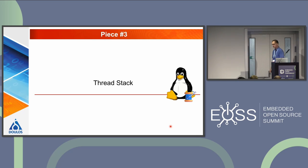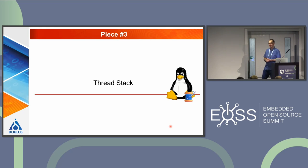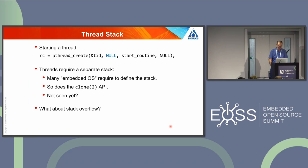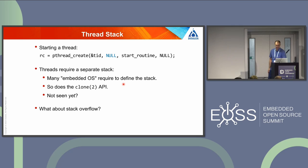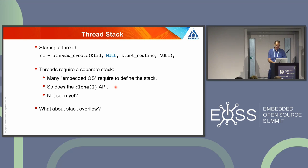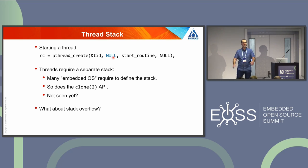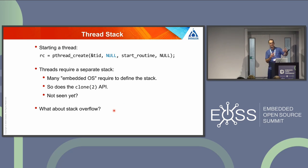Piece number three: thread stack. That's a super important topic on embedded OS. When we have a small RTOS and we create a task, we need to specify the stack. The situation we have so far: pthread_create with TID, null, start routine, null. The thread requires a separate stack. As we have seen, many embedded OS require you to define at least the stack size when creating a new task — and so does the clone() API. That second argument — null — means you are using the default thread creation attribute, and there is a default stack size. With my safety-critical twist, I'm interested in what happens if we do a stack overflow.